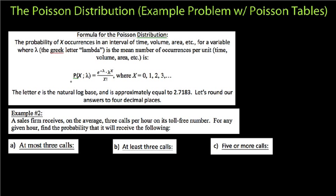The Poisson distribution is given by this formula. The probability of X occurrences per unit of time, given that lambda is the average number of occurrences. When we do probability with Poisson, we're dealing with things that occur over a period of time, a volume, or an area where we know a certain density. It's like asking: if I worked at a call center, how likely is it that I get five calls in this hour, given that usually I get about six? That's really what Poisson is asking — how likely is it that this happens, given that this is the average number of occurrences.